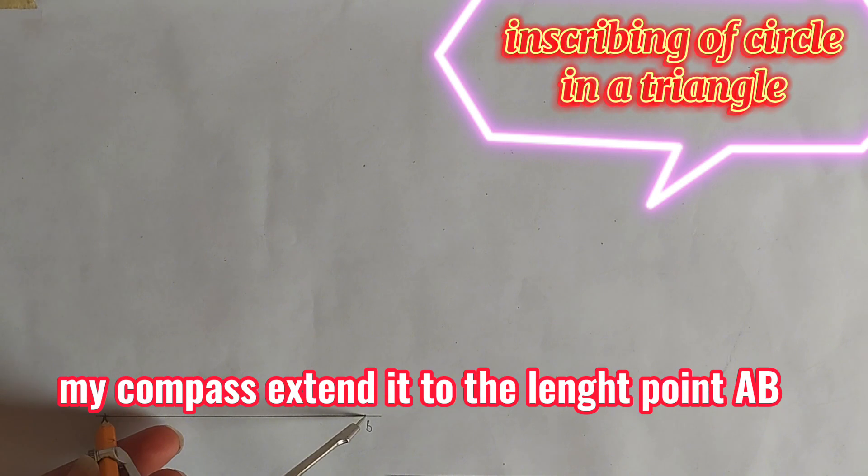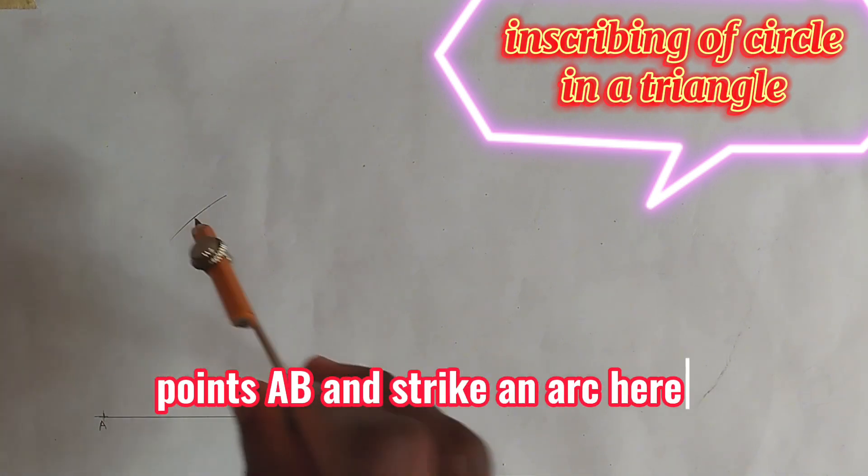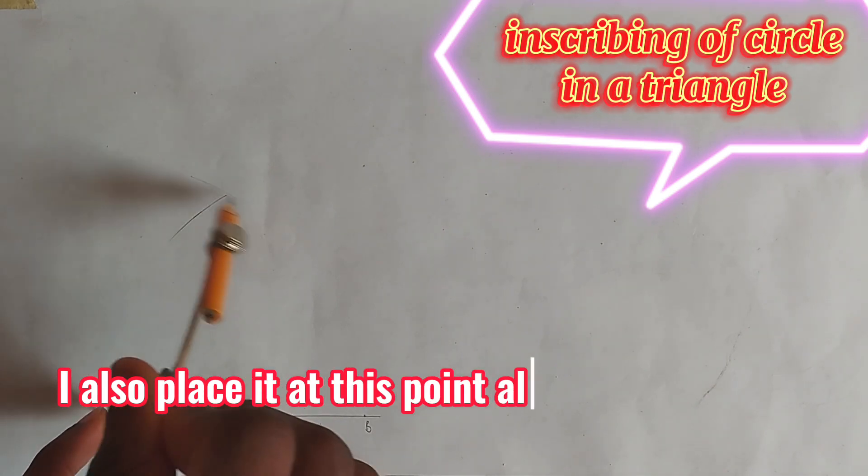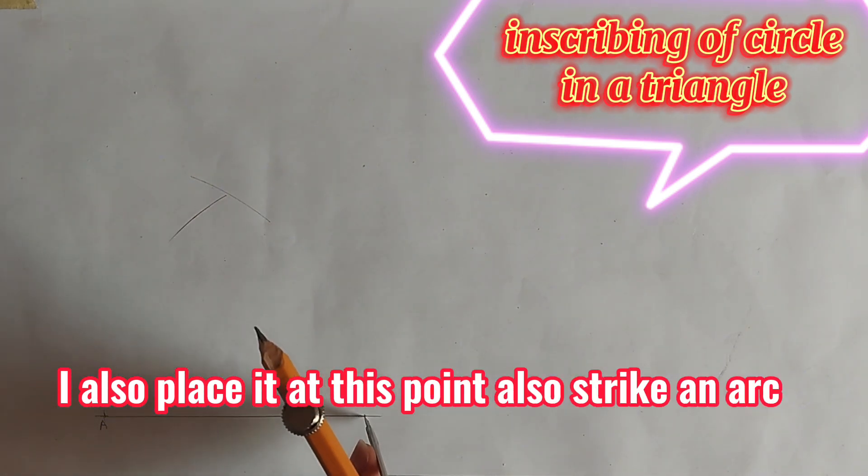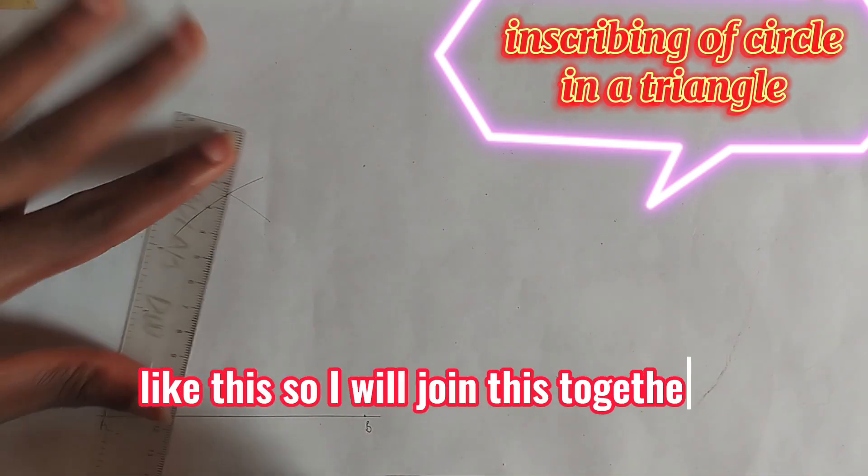I'll pick my compass, extend it to the length of point A to B. I strike an arc here. I'll also place it at this point and strike an arc like this. I'll join this together.